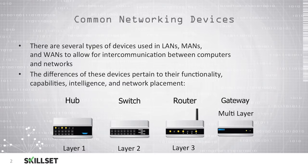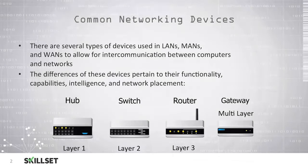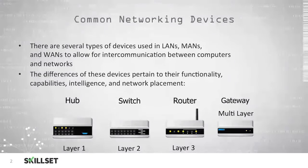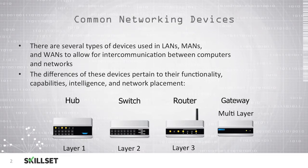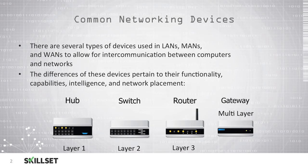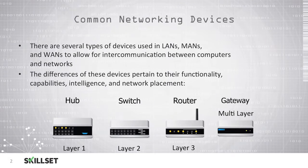Some of the most common devices are hubs, which operate at layer 1 of the OSI model; switches, which operate at layer 2 of the OSI model; routers, which operate at layer 3 of the OSI model; and gateway devices, which operate at multiple layers of the OSI model. You should remember for the CISSP examination that a gateway is a device that operates at multiple layers of the OSI model.